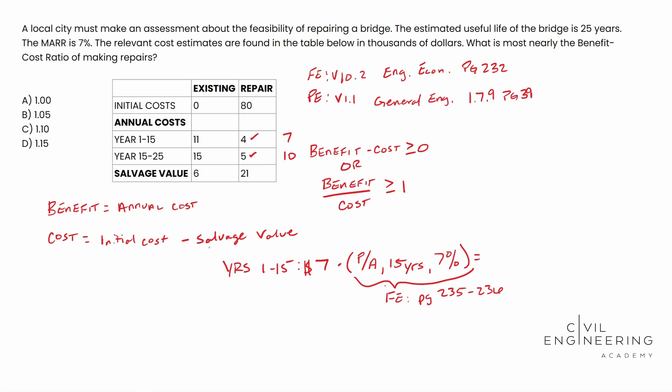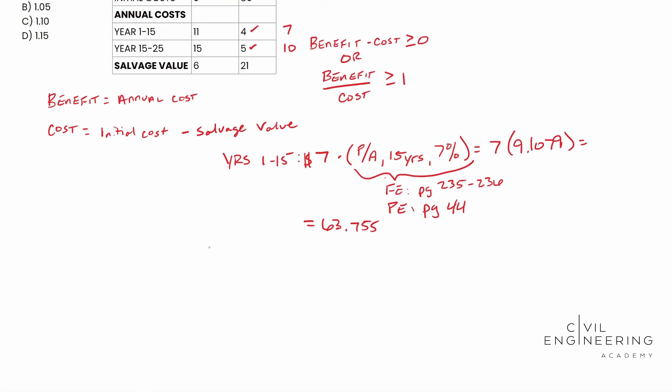Now the FE doesn't give us 7%. Don't get stopped up, don't get messed up over this, because you can actually interpolate between six and eight and actually get your 7%. So I encourage you to do that. I'm not going to walk you through that, but practice that, because they don't have to give you the 7% table. It could show up on the exam. And then for the PE, we're going to be looking in page 44. When you go to that page there, we're going to have seven times 9.1079. And this guy ends up being 63.755. And then I'm going to scroll down a little bit here.